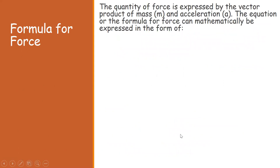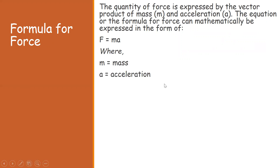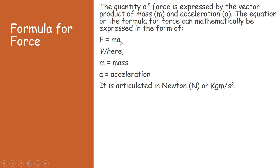The formula for force — which we will derive later — is F = ma, where m represents mass and a is acceleration. According to this formula, the unit for force is kilogram·meter per second squared (kg·m/s²). This unit is named after the scientist Newton, so the SI unit of force is Newtons.